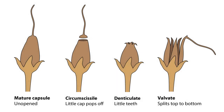When the mature fruit opens, is it circumcissile — a little cap pops off the top? Is it denticulate — the tips split and fold back, leaving little teeth? Or is it valvate — it splits open from tip to base? In the wild, last season's fruits often remain; inspect those to learn how they opened.